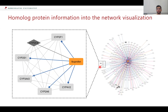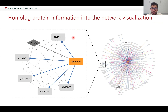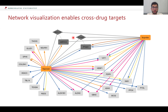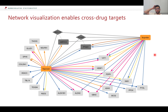We were also able to map homolog proteins into the networks. For example, a cytochrome protein is a known target of ibuprofen based on DrugCentral — even though we don't identify this particular target in our dataset, we do identify some of its homologs. We were also able to visualize cross-drug targets — proteins that are targeted by two different drugs. For example, naproxen and ibuprofen have some shared targets that are easily visible. This is a very nice way to visualize a lot of information from many drugs and organs in a single network.